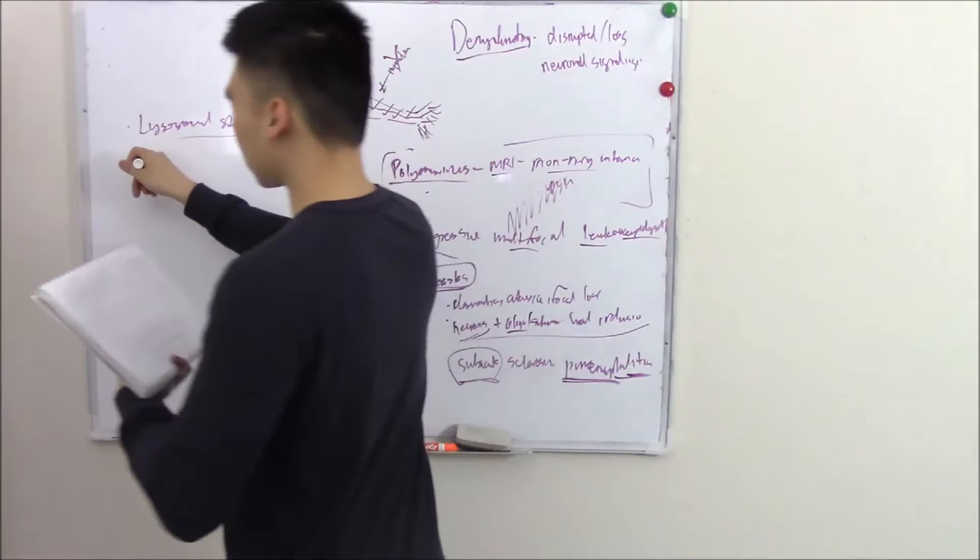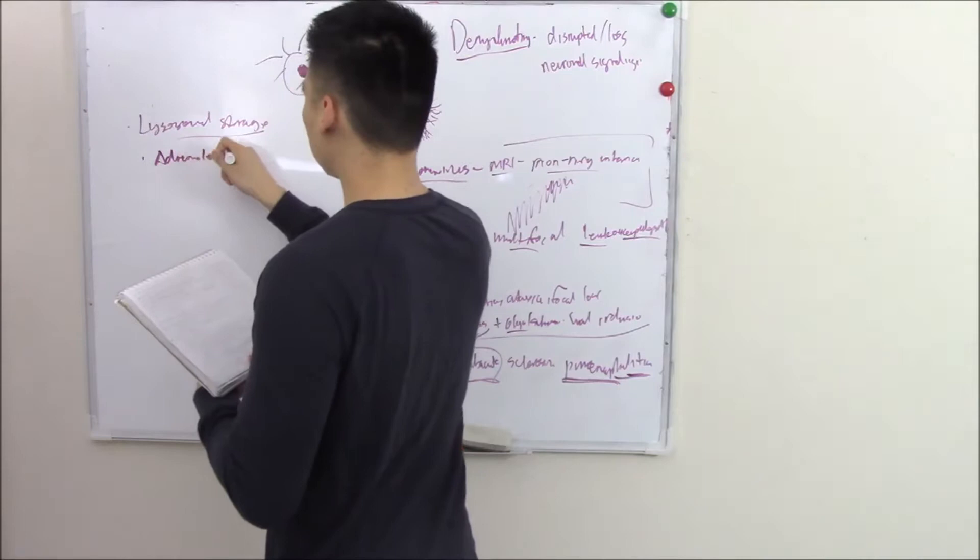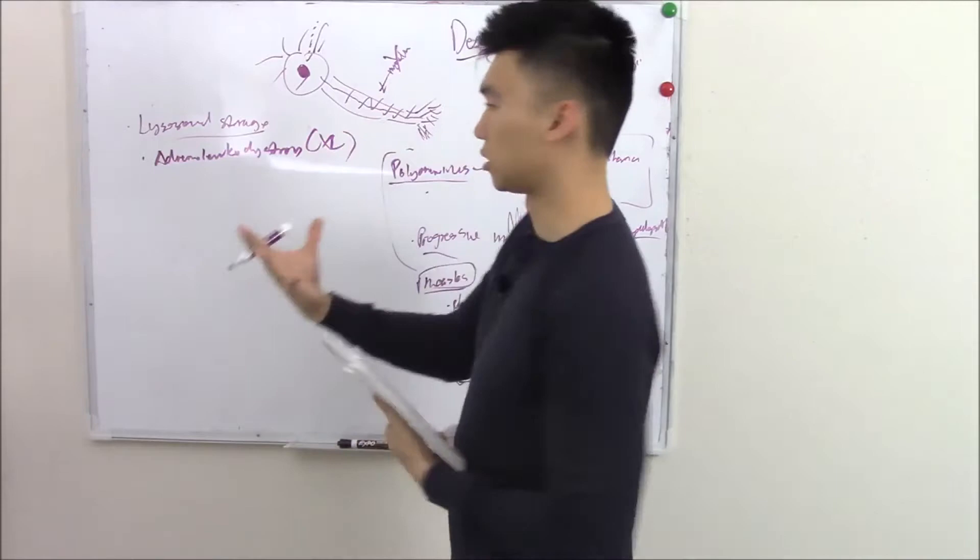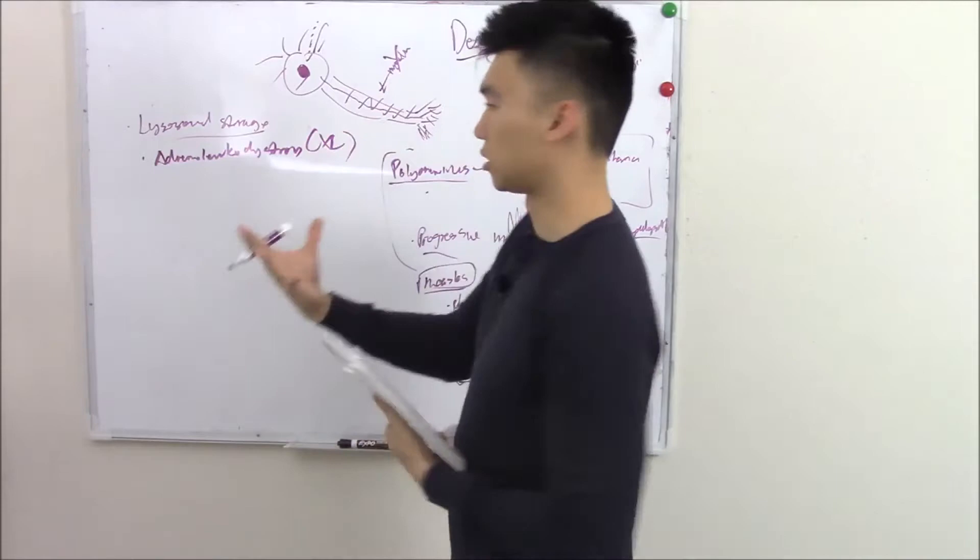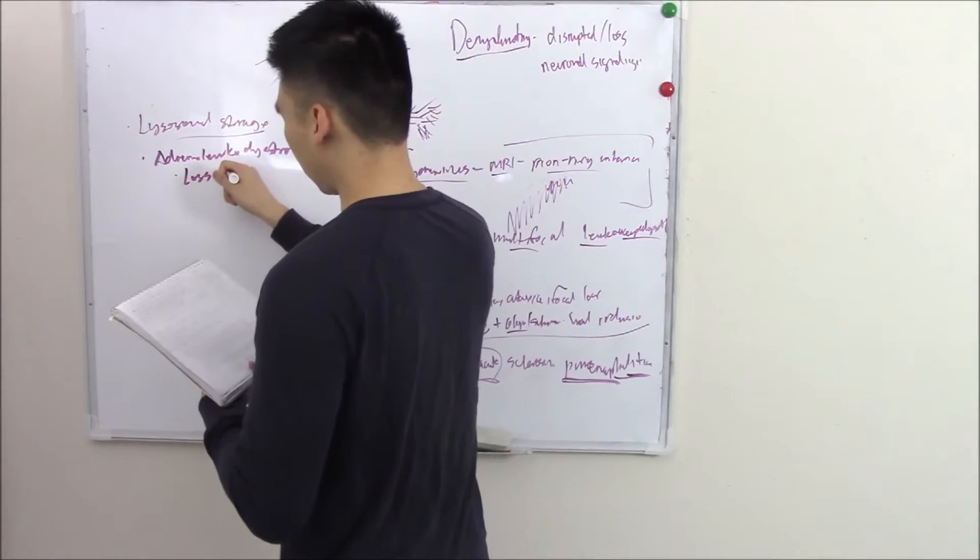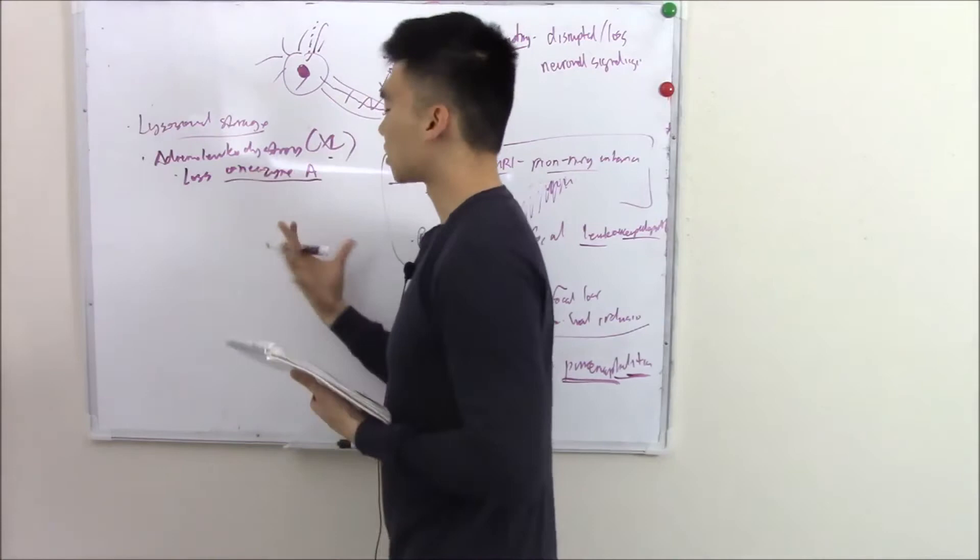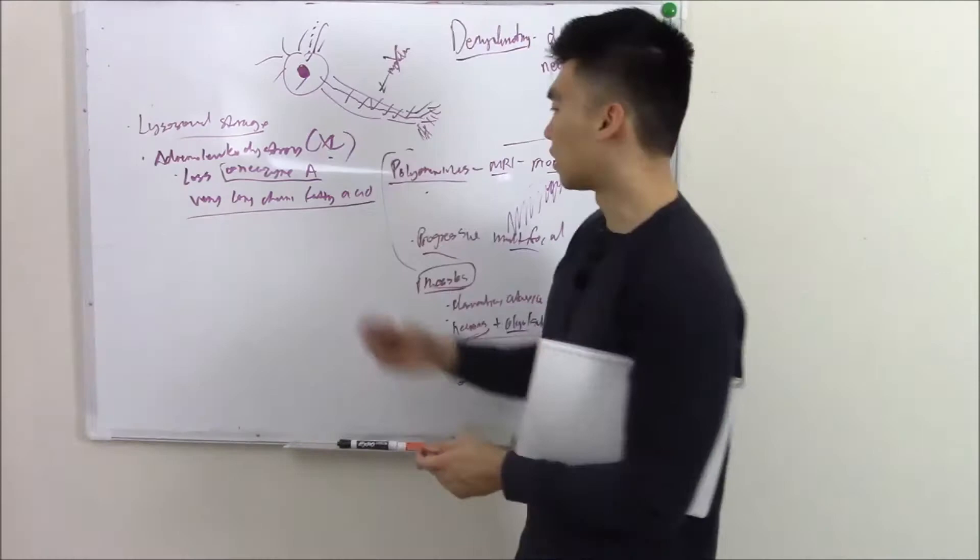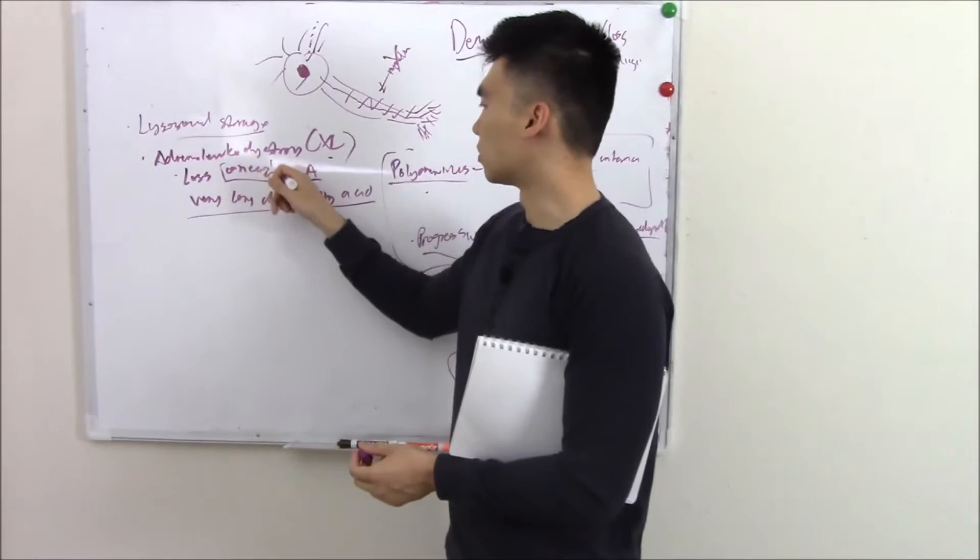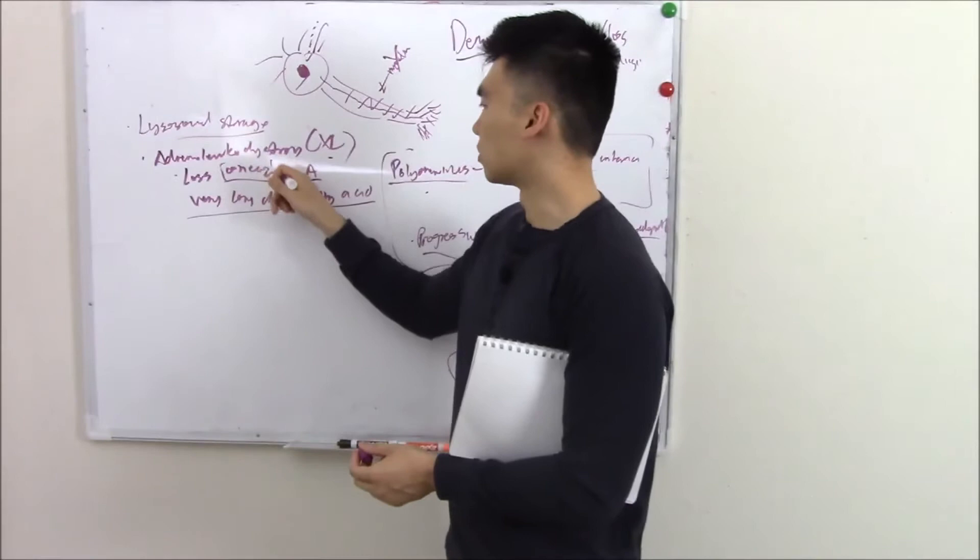You can have something rare called adrenoleukodystrophy. This is an X-linked disorder, which means it shows more in men. Because it's an inherited disorder, it'll show up early. This is due to a loss of this enzyme called coenzyme A, and particularly this enzyme helps break down very long chain fatty acids. If you can't break that down because you're missing this enzyme, then those chains will build up in your cells and your cells will die.